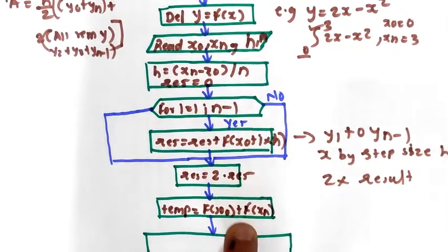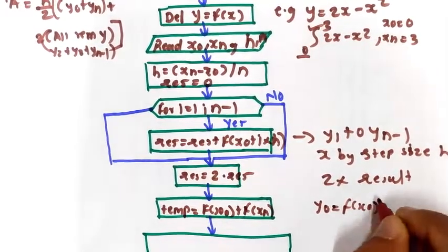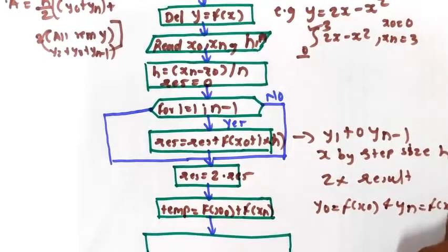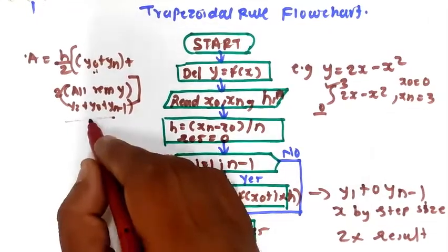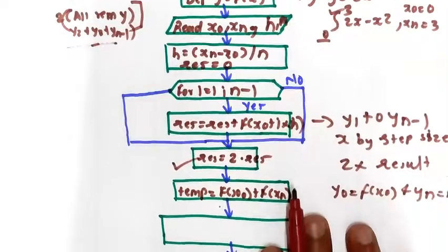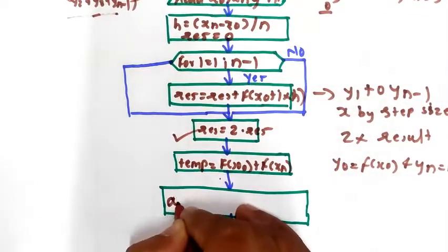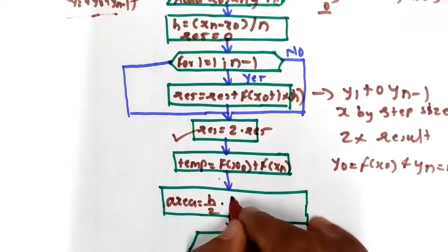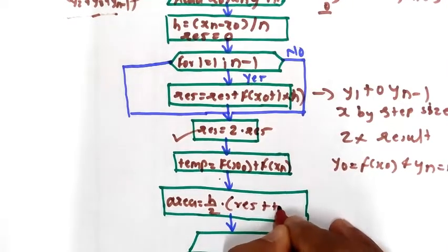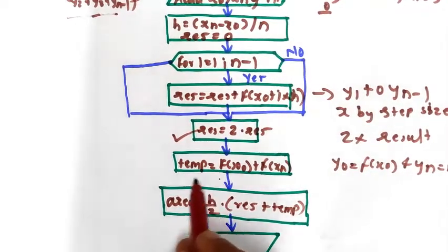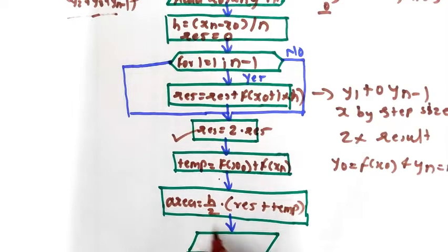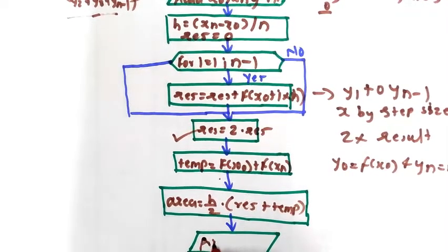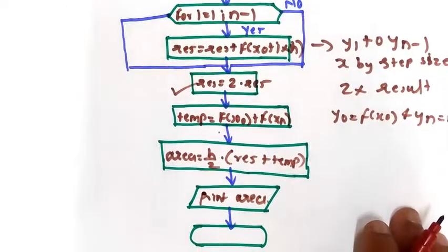We calculate this temp term — y0 plus yn. Then the next step is to find the area, which is equal to h by 2 into (result plus temp). This temp value — f(x0) plus f(xn) — combined with the doubled intermediate result, multiplied by h by 2, gives us the area. At last, we print this area and the flowchart ends.